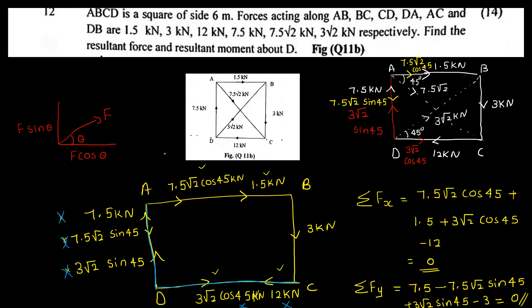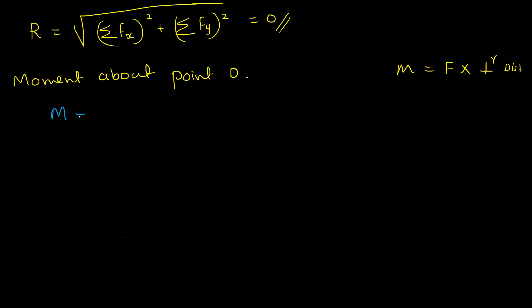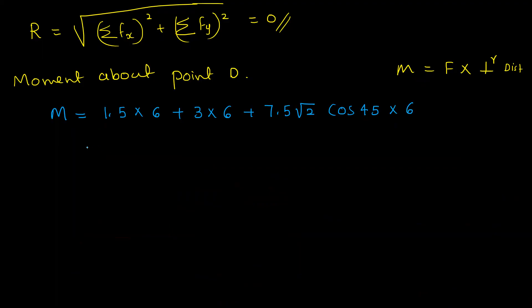This is a square of 6 meters, so the perpendicular distances are 6 meters. The moment about D equals 1.5 × 6 plus 3 × 6 plus 7.5√2 cos 45 × 6, which equals 72 kilonewton meters. The force unit is kilonewton and distance is meter, giving the result as 72 kN·m.